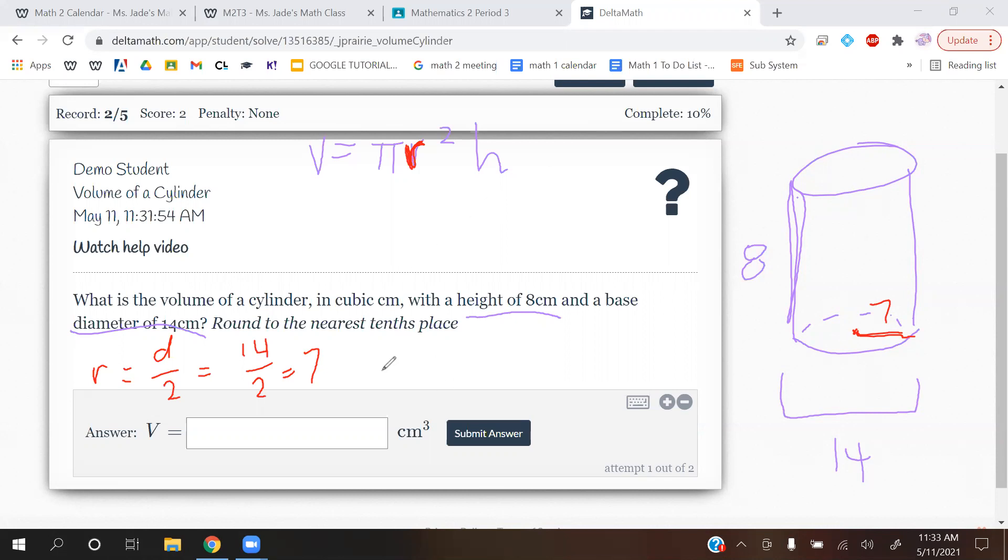Okay, and then let's plug it in. Volume is equal to π, radius—we just calculated our radius, it is 7—π is 7 squared, and then our h, which is the height, we just were just given it, it's right over there. So π, 7 squared, 8, and then I shall go type this into our calculator.